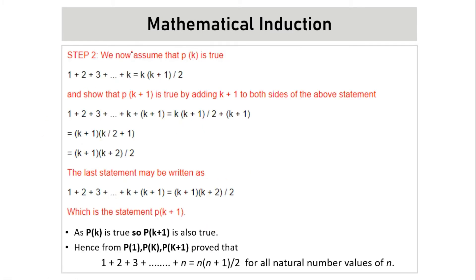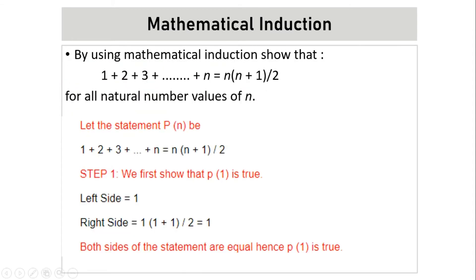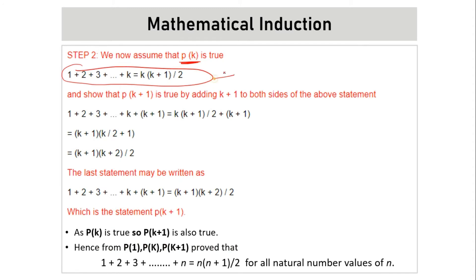In step two, we will first assume P of K is true. We write the equation in K format — that is, in the equation, instead of n we replace it with K, and this will be called P of K. We have assumed this is true, and we have to show that P of K plus one is true by adding K plus one.